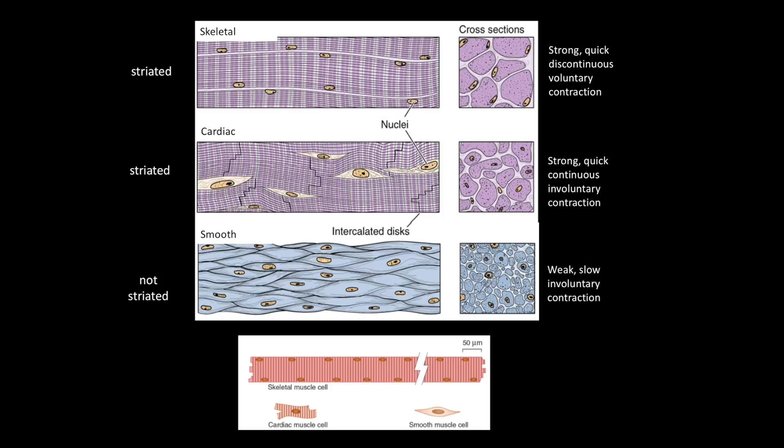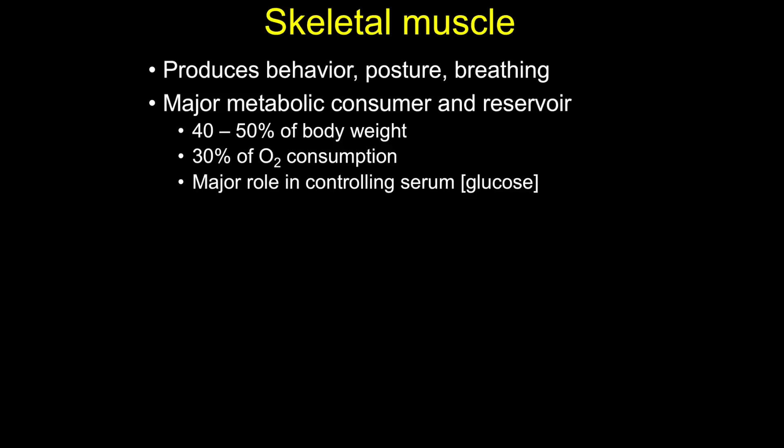We're now going to discuss the organization of skeletal muscle in more detail, remembering that its structure reflects its functions. Skeletal muscle is critical for most of our behavior — posture and drawing breath. Because of its high energy requirements, it is a major metabolic consumer but also stores vast amounts of energy. Along with movement, skeletal muscle plays a major role in controlling serum glucose concentration, which we'll explore later in our unit.